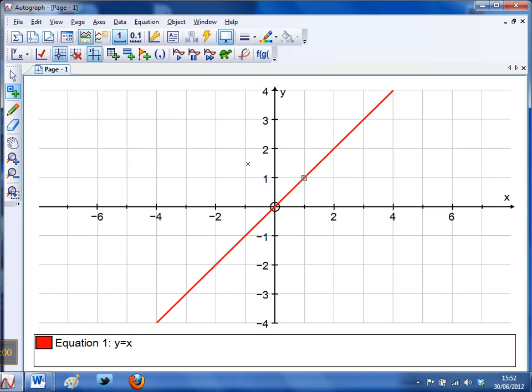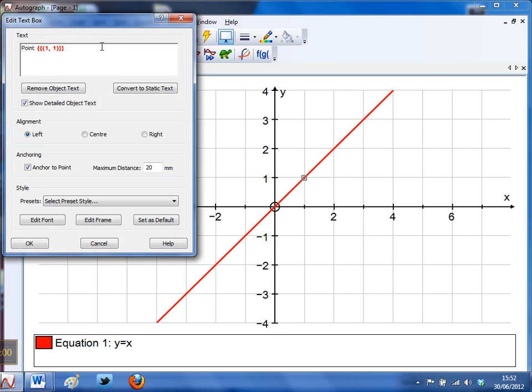Now actually I could do with the students to know what that coordinate of that point is, so with it highlighted I'm just going to hover up to the top here and I'm going to click on text box. And I'm going to get rid of the word point so I just get the actual coordinates, and notice that's red, so that's a dynamic text box, so that'll change as the coordinate changes, and I'm just going to select a preset style of the good old ice blue.